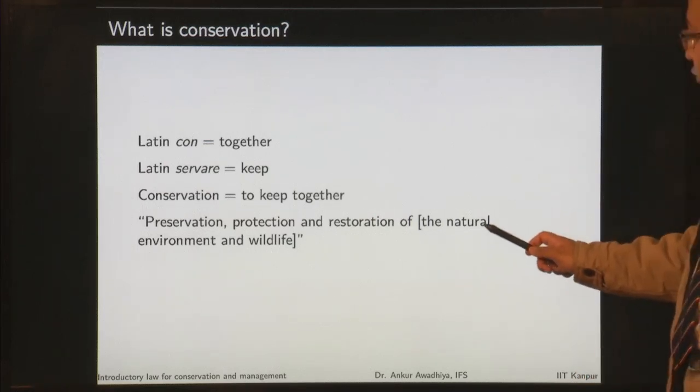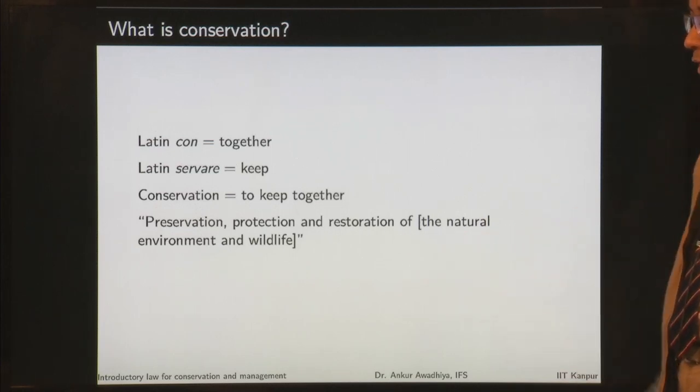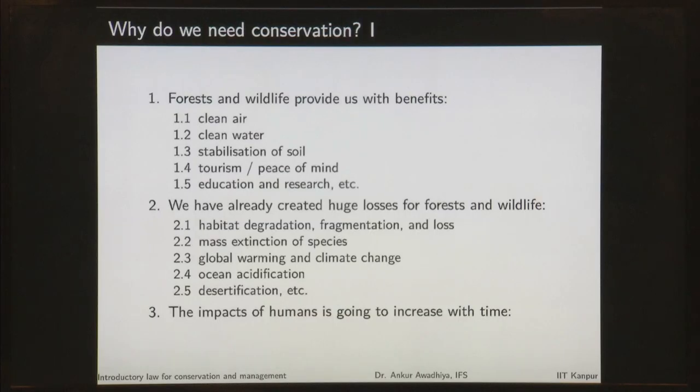In certain cases, the natural environment and wildlife have already been destroyed or disturbed to quite an extent. In those cases we will try to restore them — to bring them back to their original condition. So conservation is preservation, protection and restoration of the natural environment and wildlife. Conservation is required because firstly, forests and wildlife provide us with several benefits. There are several direct and indirect benefits that we get out of the forest, and if we require those benefits, we will require forest and wildlife to be maintained in a best-functioning state.